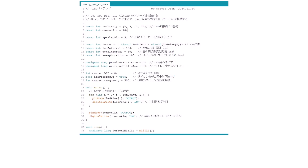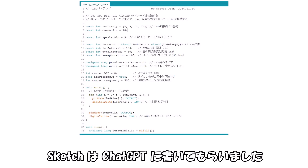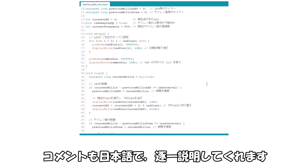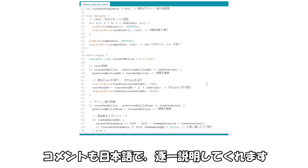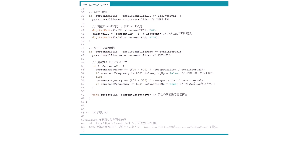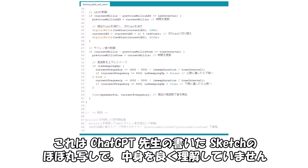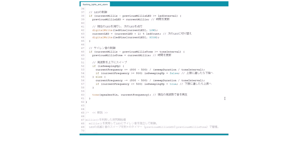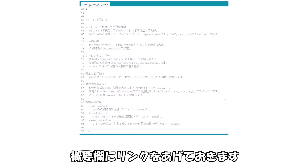リード線は光を遮らないように通しています。クラゲ型と同様、Arduino Nanoで光らせてみましょう。Arduino Nanoで警報音を生成し、D級アンプでスピーカーを鳴らすようにしました。スケッチはチャットGPTに書いてもらいました。コメントも日本語で逐一説明してくれます。これはチャットGPT先生の書いたスケッチのほぼ丸写しで、中身をよく理解していません。概要欄にリンクをあげておきます。